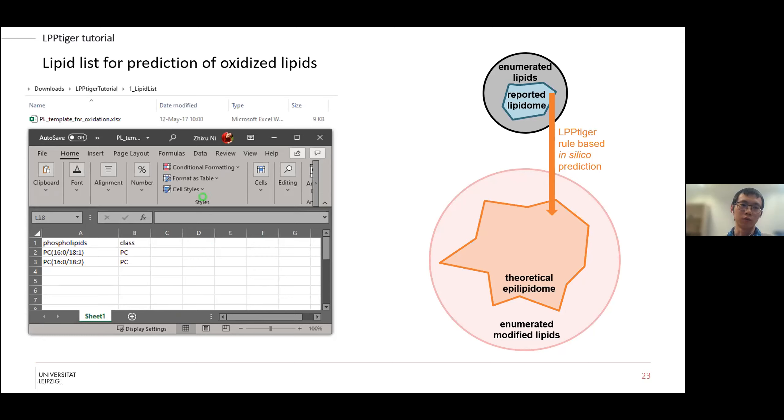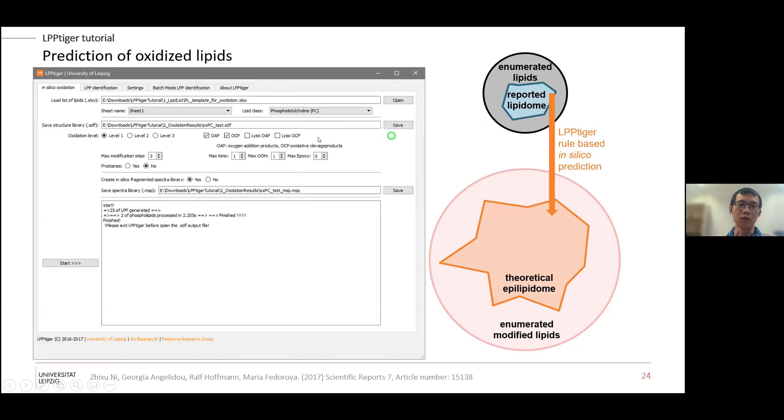Then we can start. The first step is to predict or to generate a theoretical epilipidome. If you open the tutorial file, we have the template. In this tutorial we prepare just two simple lipids which represent the reported lipidome. Then you open the software, you put this in Excel and select the class. You can define the oxidation levels, how many maximum modifications. You can control the keto groups, hydroperoxy groups, you can disable peroxides. You can decide whether you want to generate in-silico fragmentation pattern or not. You can save it as an MSP file, which is explained by MS-DIAL. Then you can generate it - just click start. It will generate the theoretical epilipidome.